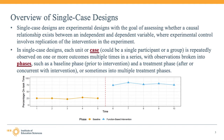A student may have reached a developmental milestone at the same time as the onset of the intervention, or there may have been some change in the classroom that could have had an impact on the outcome. Researchers use elaborations on this basic AB design, which allows for the replication of intervention efforts across time, across cases, or both.